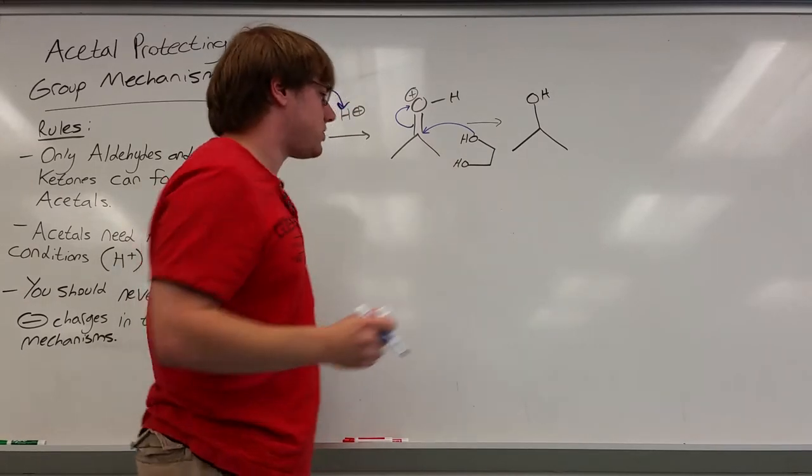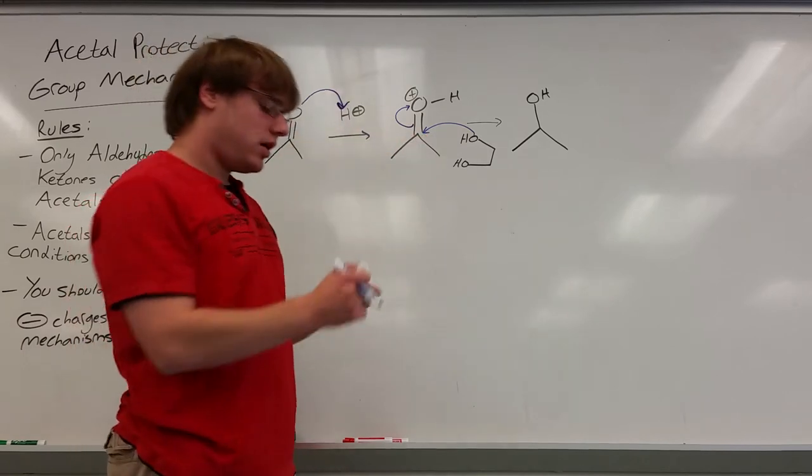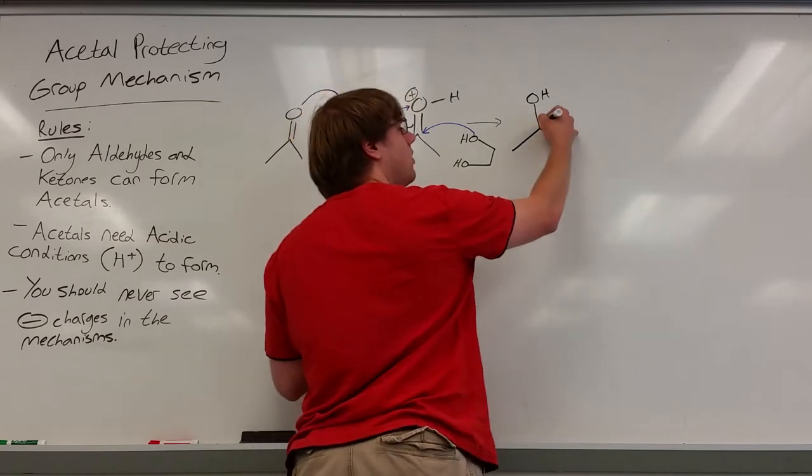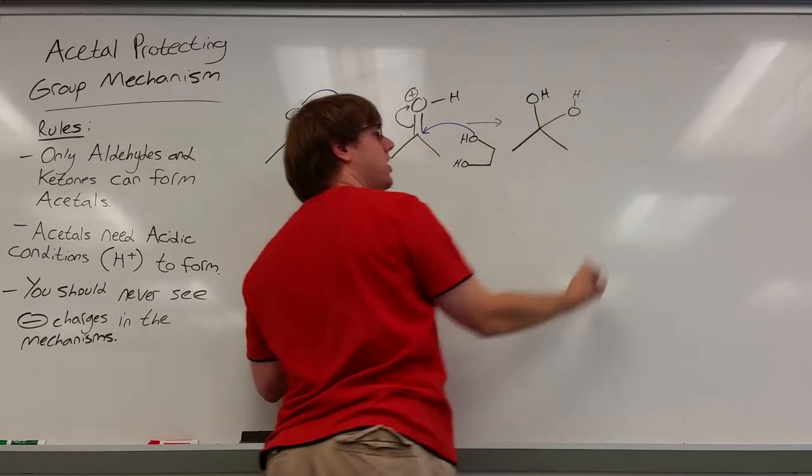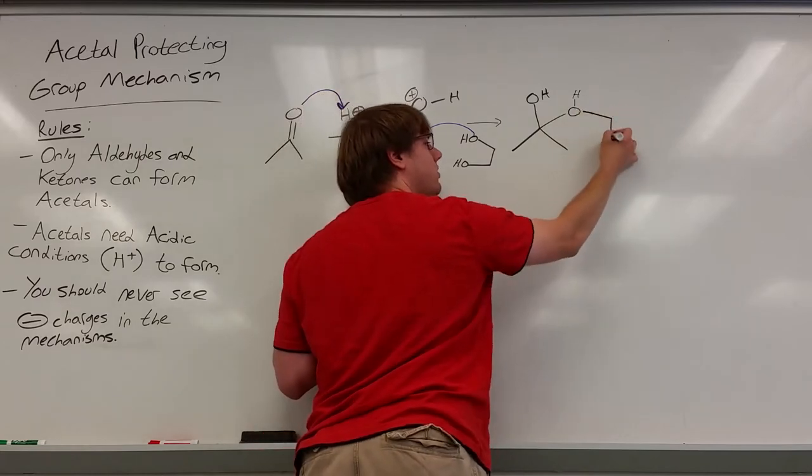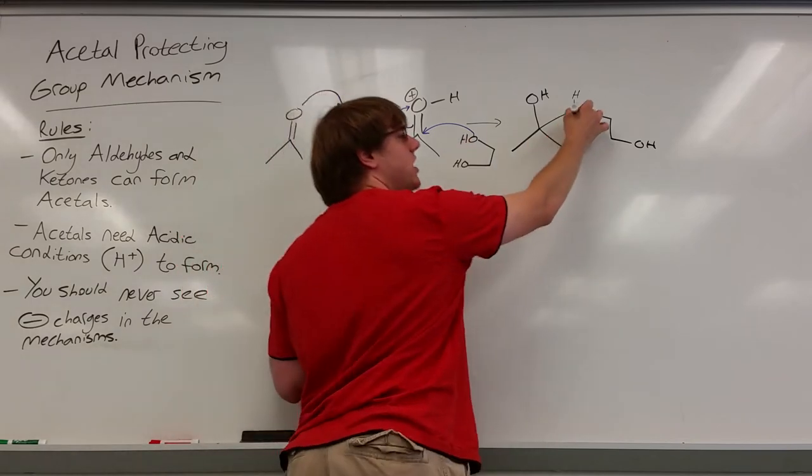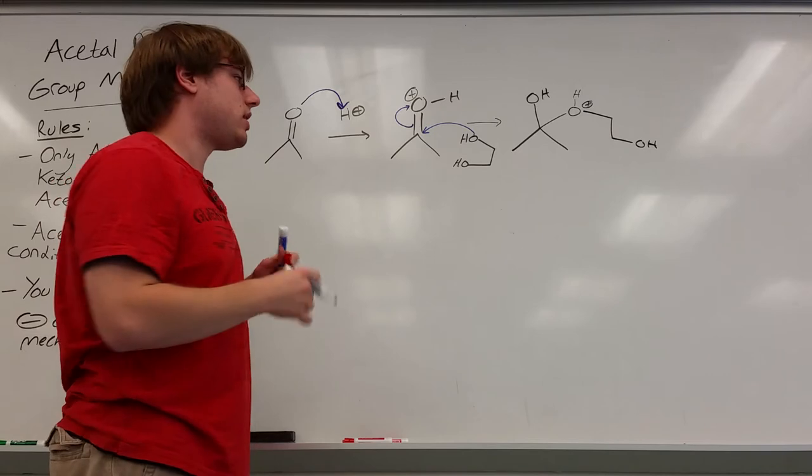So what's going to happen is the same thing as what we saw before. The OH comes in, attacks the double bond O, resonates up, and that means that that whole thing is going to be attached over here. The oxygen that did the attack, the hydrogen that was sticking off of it, the two carbons, and the OH that was connected to them. And of course the oxygen that does the attack will become positive because it used up its lone pairs to make that bond.